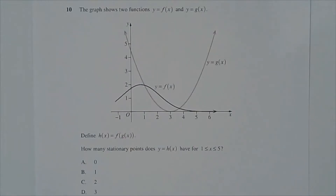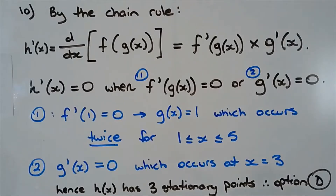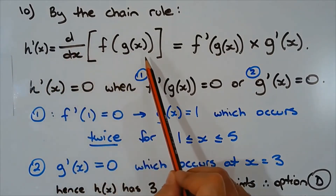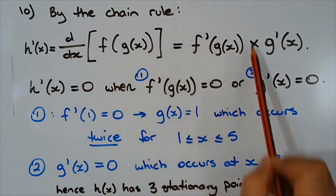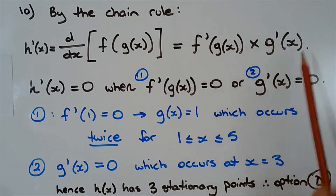Question 10. The graph shows two functions, y equals f(x) and y equals g(x). Define h(x) equals f(g(x)). How many stationary points does y equal h(x) have for x between 1 and 5? H(x) equals f(g(x)) is a composite function. Using the chain rule, h'(x) equals f'(g(x)) multiplied by g'(x). To find stationary points, let h'(x) equal zero, which occurs when either f'(g(x)) equals zero or g'(x) equals zero.